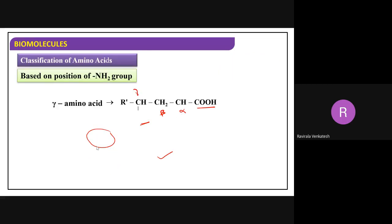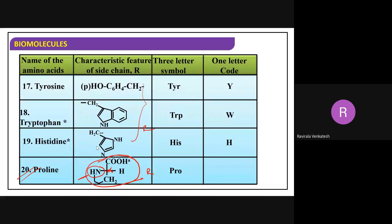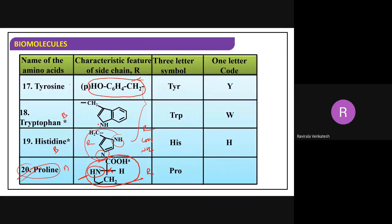Let me ask some questions. Proline is which type of nature? Neutral. Histidine - you observe more nitrogens in the R group, but there is one COOH and one NH2 apart from the R group, so it is basic in nature. Tryptophan has nitrogen in the ring - basic in nature. Tyrosine - the R group has neither carboxylic nor amine group, so it is neutral.